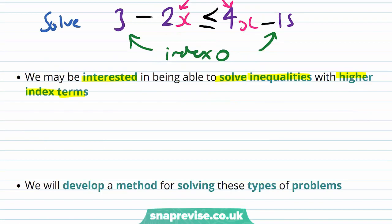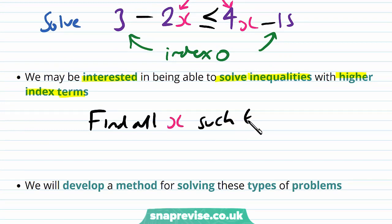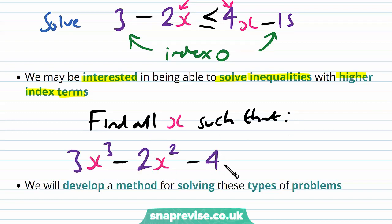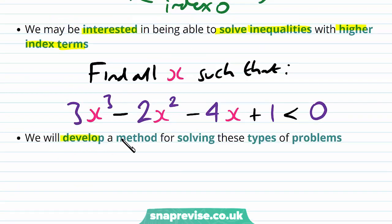For example, we may want to find all values of x such that 3(x³ - 2x² - 4x + 1) < 0. This inequality has index 0 terms, an index 1 term (the -4x), but also index 2 and index 3 terms: the -2x² and 3x³. We will develop a method for solving these types of problems.